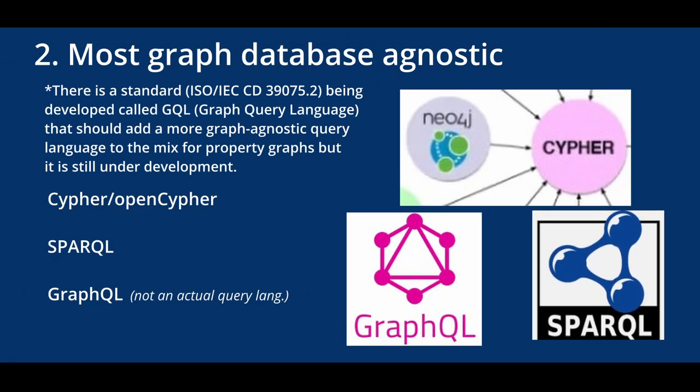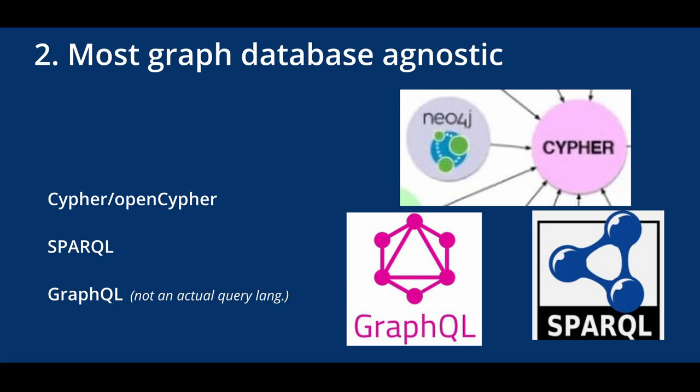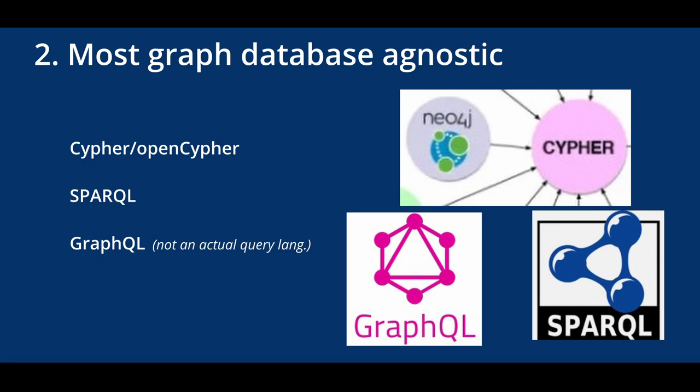Category two is most graph database agnostic — the languages you'd want to learn if you don't know which graph database you'll work with, or if you want to get broad mileage from your choice. On the property graph side, that's Cypher and OpenCypher, used across many databases. On the RDF and OWL side, it's SPARQL and SPARQL Star, which are standards-based. GraphQL also gets an honorable mention here, as many in the graph space use it to access graph data without requiring users to know graph query languages.